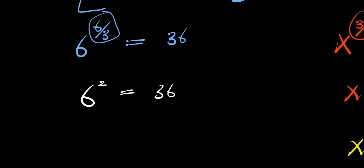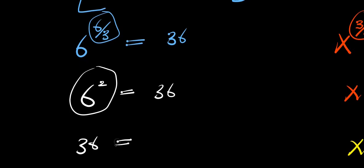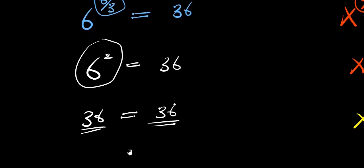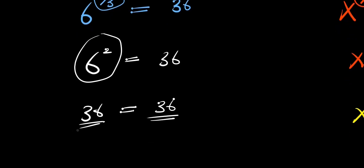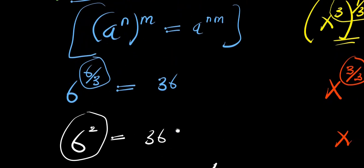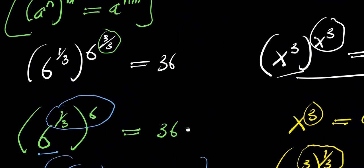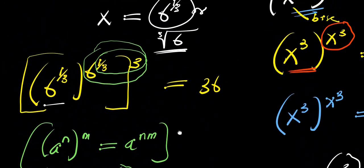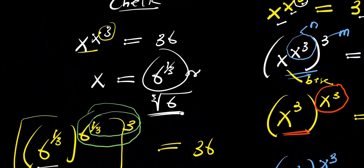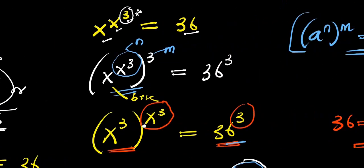From here, we have 6 to the power of 2, that is 36, so we have 36 equals 36, because 6 to the power of 2 is 6 times 6. This simply means the left hand side equals the right hand side, and our solution is correct. Please don't forget to subscribe and share this video with your friends. Thank you and goodbye.